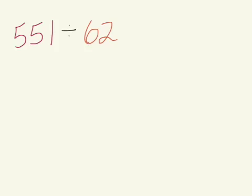Now, the first thing we should always do so that you can ask yourself 'does this make sense' is estimate — a 30-second quick estimate. One way to do this is to look at your divisor, the 62, and round it to the nearest 10. In this case, it would be 60.